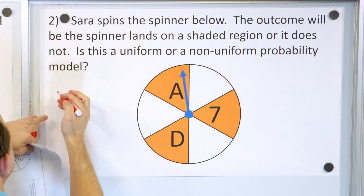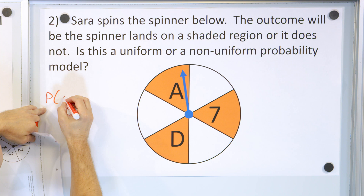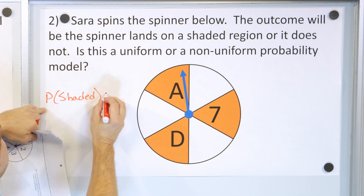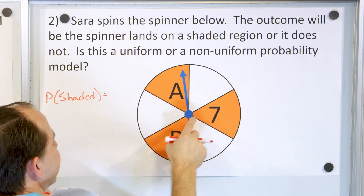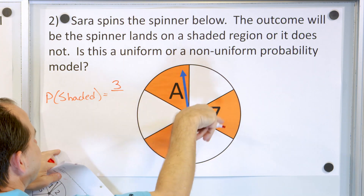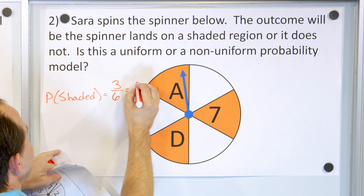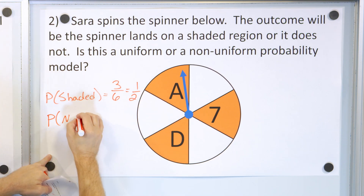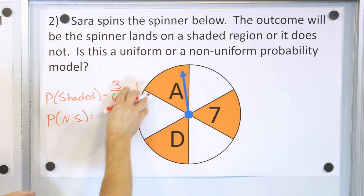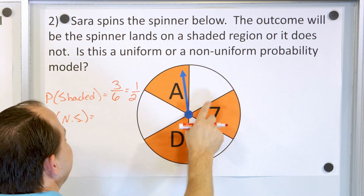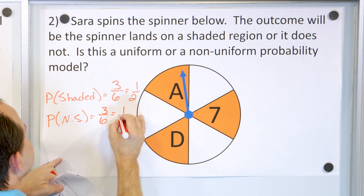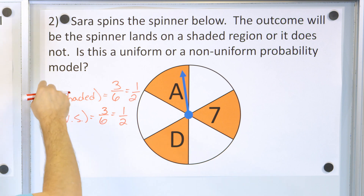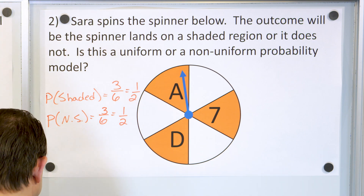Shaded region or non-shaded region. The probability of shaded — how many shaded regions do we have? One, two, three out of a total of six possible positions, which reduces to one-half. And the probability of not shaded — how many of those positions do we have? We again have one, two, three out of six. So we get exactly the same thing: one-half. The probability of shaded and the probability of not shaded are exactly the same likelihood.